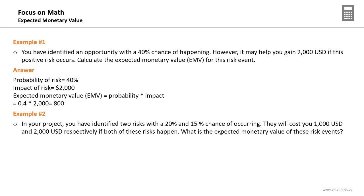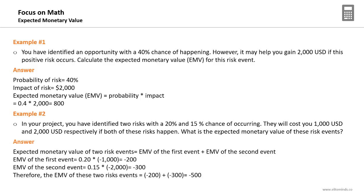Another example: you have identified two risks with a 20% and 15% chance of occurring, costing $1,000 and $2,000 respectively. You calculate the EMV for both risks and sum them. Both are threats, so you assign negative signs. The total EMV for the project is the sum of all individual risk EMVs — positive for opportunities, negative for threats. In this example: −$200 + (−$300) = −$500 USD total.